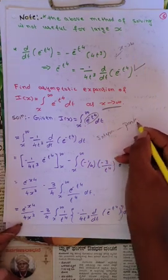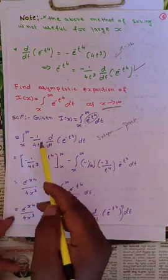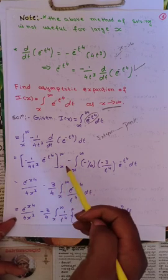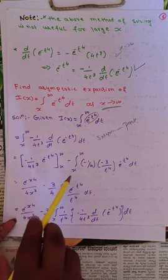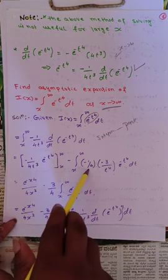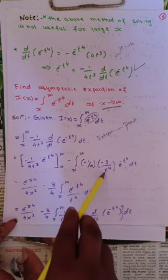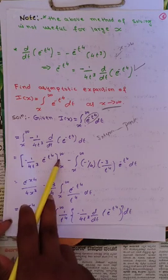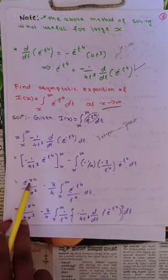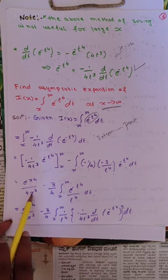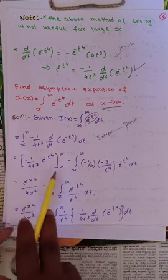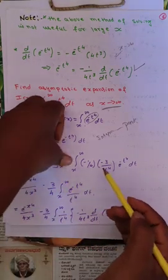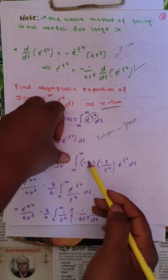So integration by parts gives: minus 1/(4t³) times e^(-t^4) evaluated from x to infinity, minus the integral from x to infinity of minus 1/4 times minus 3/t^4 into e^(-t^4) dt. Applying the limits, we get e^(-x^4) divided by 4x³.